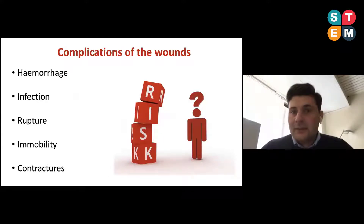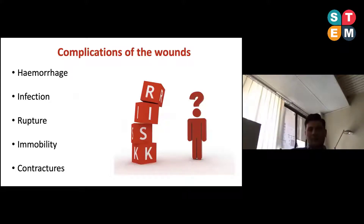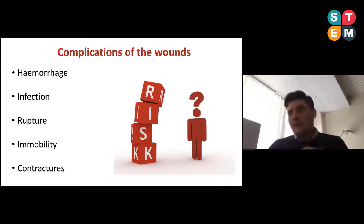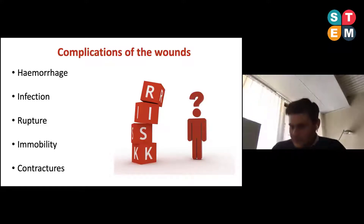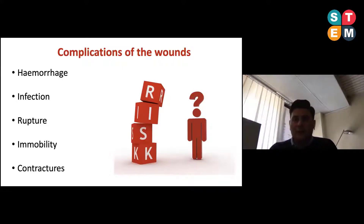We can have some complications in the wound healing process. If there is an impairment in the early phases, we can have infection, rupture, or immobility. All of these complications can cause further impairment in wound healing and contribute to chronic wound formation.